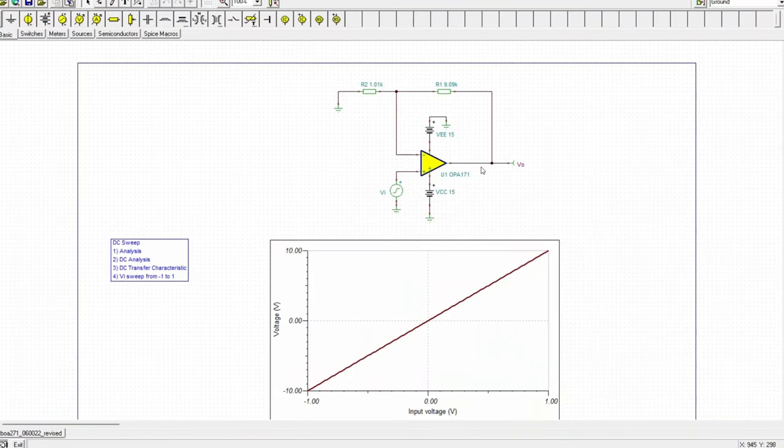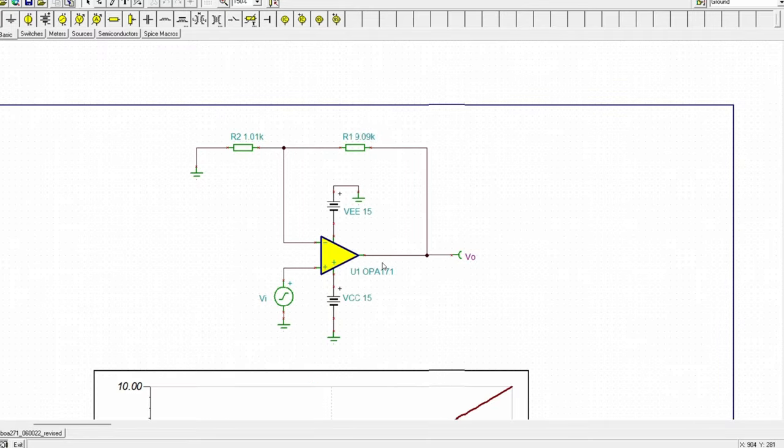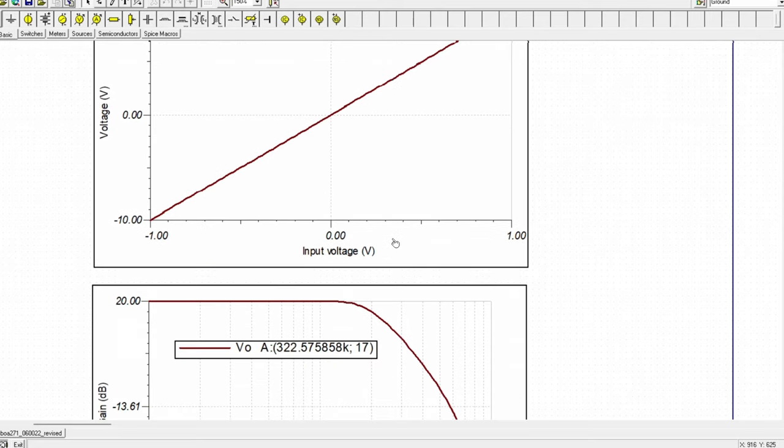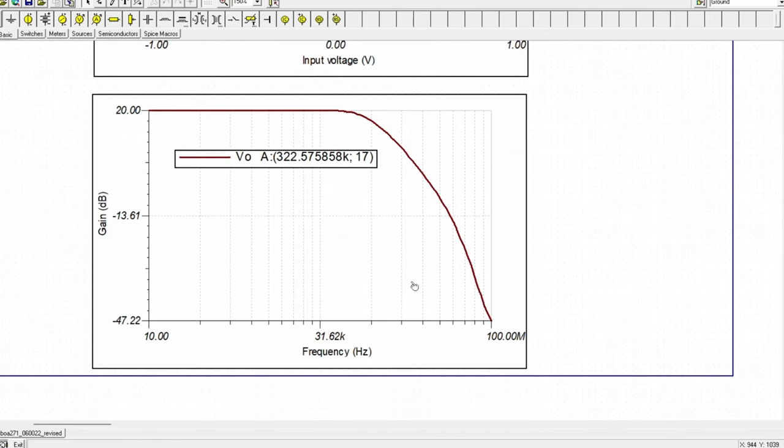Now we will see the simulation of this circuit. I am using Tina TI software to showcase the simulation. This is the OPA 171, the R1 and R2. The circuit is the same as we calculated. Our input voltage is a sine wave with 1 volt peak-to-peak. And the output voltage swings beautifully between minus 10 volts to 10 volts. And its phase margin is same.